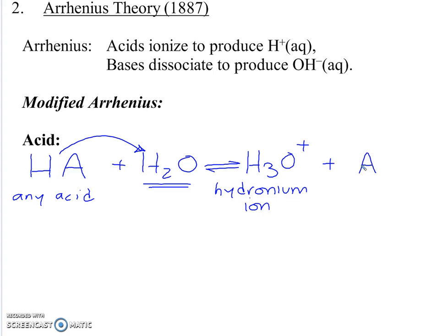But when I take the hydrogen off of HA, I've just lost a positively charged proton, leaving the A one negative. So when you remove a hydrogen from an acid, the remaining substance is going to get one more negative.